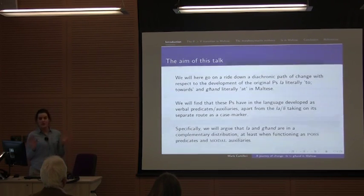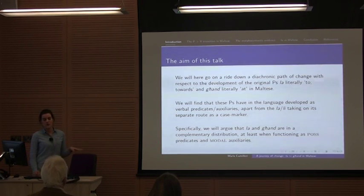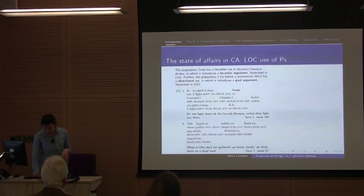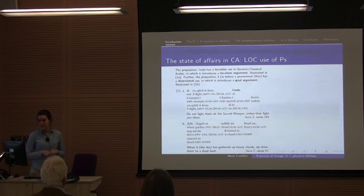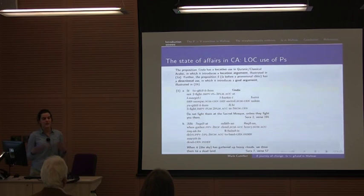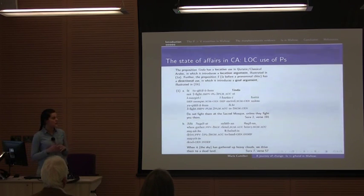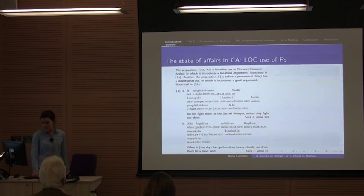For those of you who have no idea what Maltese is — in terms of sociolinguistics it's a language on its own. However, if you exclude sociolinguistic considerations and just look at the grammar, Maltese is really just like any other Arabic dialect. Because of that, I'll start with what I believe to have been the precursor of 'and' and 'la', and that's the state of affairs in classical Arabic. Classical Arabic has both these same prepositions, 'inda' and 'li' (or 'la', depending on position). 'Inda' introduces a locative argument, while 'li' introduces a directional goal argument.